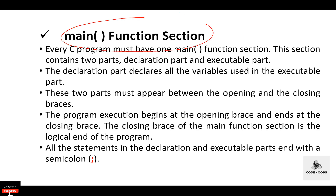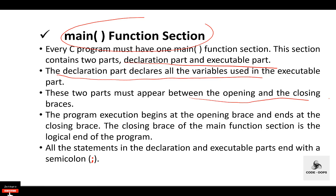Then the main function section, which is compulsory for every C program. This section contains the main function, and the C compiler starts execution from the main function. It can use global variables, local variables, inbuilt functions, and user-defined functions. The return type of the main function can be void or int. This section has two parts: the declaration part and the executable part. The declaration part declares all variables used in the executable part, and both parts must appear between the opening and closing braces. Program execution begins with the opening curly brace and ends with the closing curly brace. All statements in the declaration and executable parts end with a semicolon.